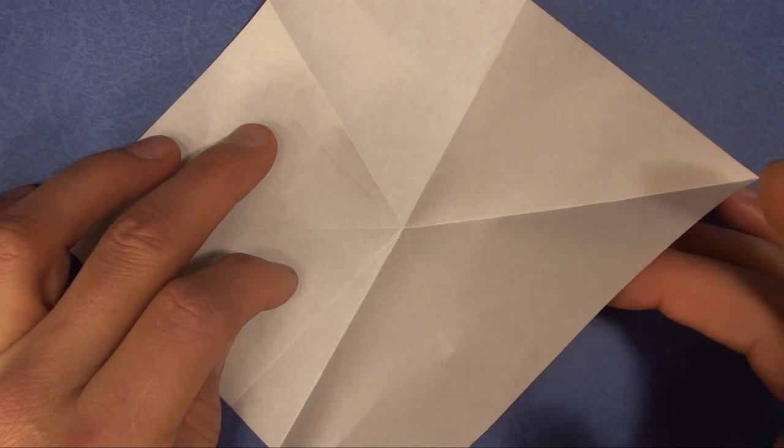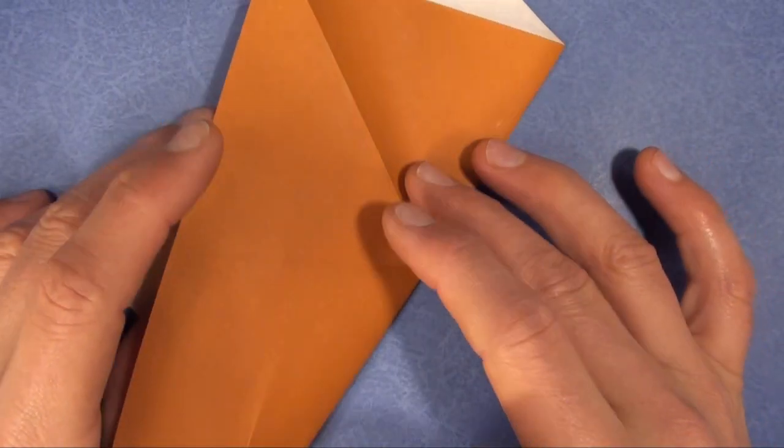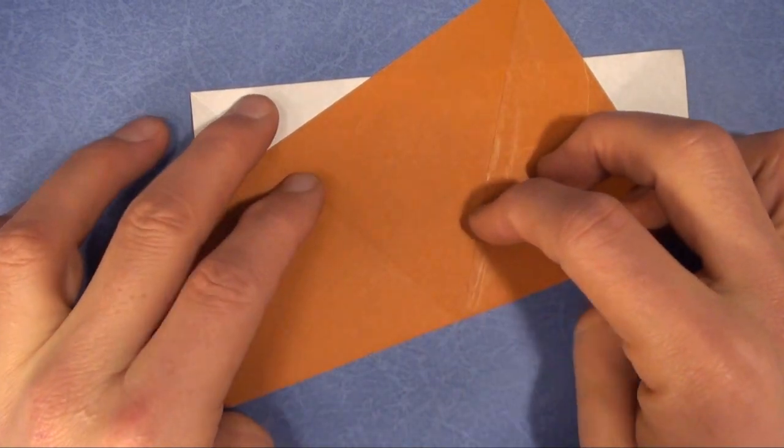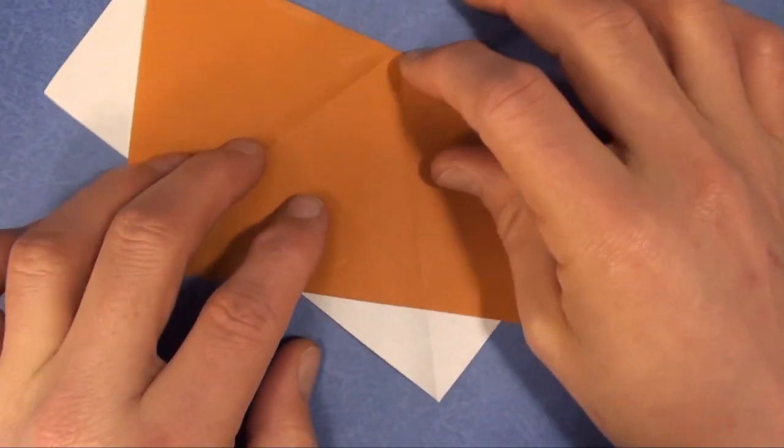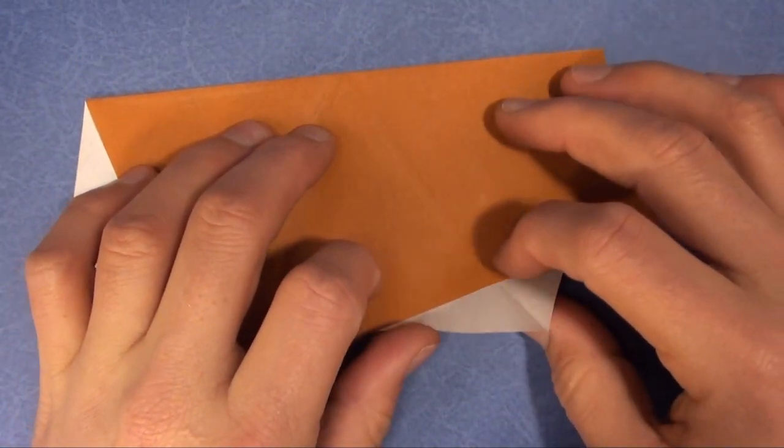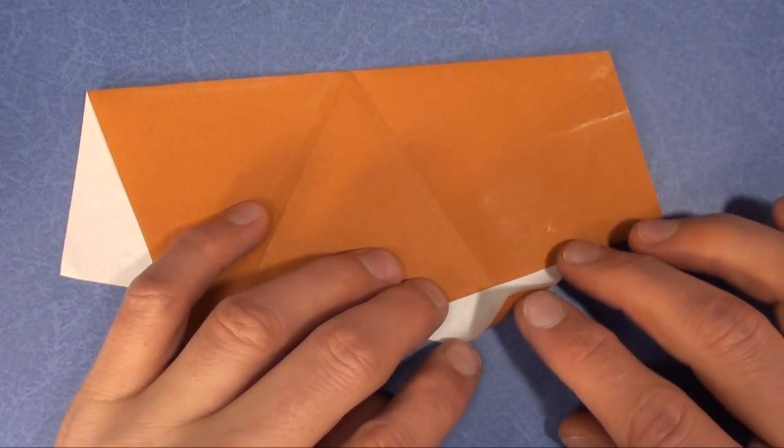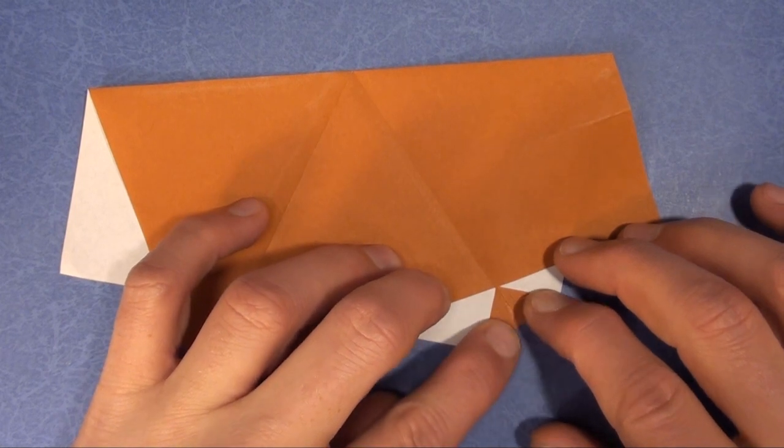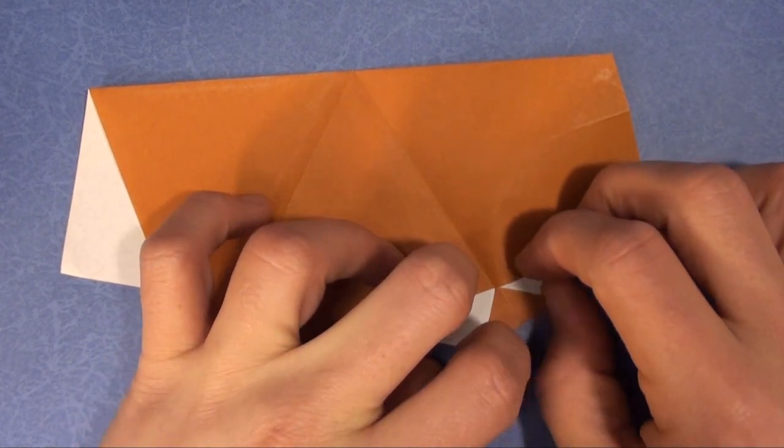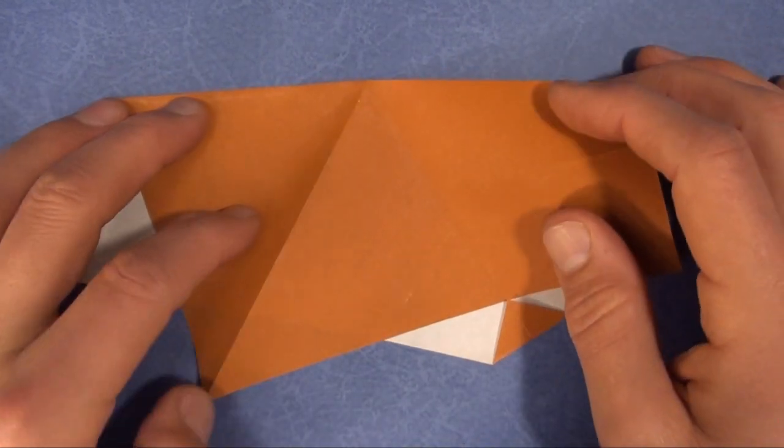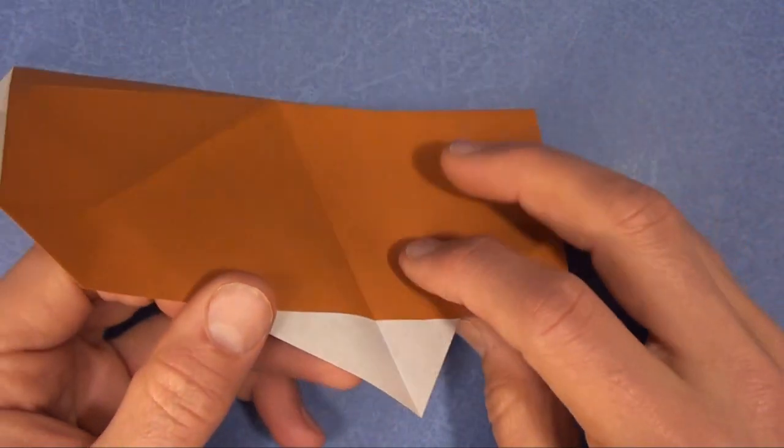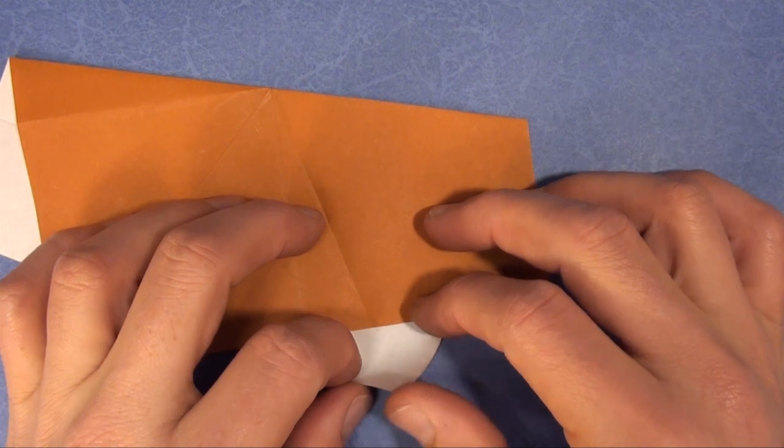And we're going to fold on the existing valley fold like that. And we're going to fold this corner right to the edge so that it hits that crease. And we're going to do the same thing on this side, but we might as well turn it over to make it a little bit easier. There we go.